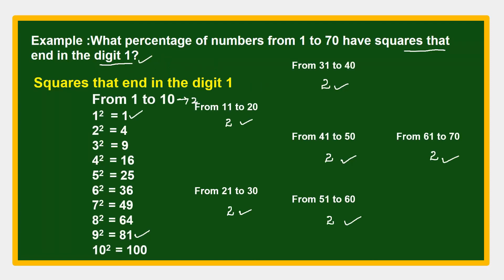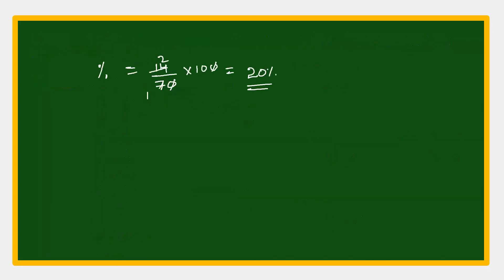See, what percent of numbers from 1 to 70 have squares that end in the digit 1? From 1 to 10 we got 2 numbers. Similarly, 1 to 70 we got 14. So percentage formula: divided numbers by total numbers into 100.